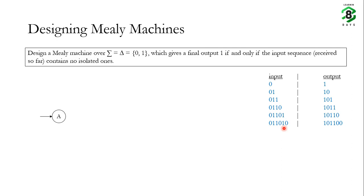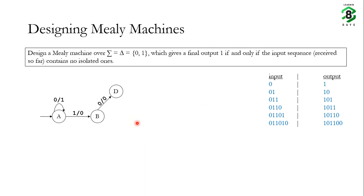We start from initial state A. As long as the machine receives 0 in state A, it produces output 1 because there are no isolated ones. The moment it receives a 1 in state A, it has seen its first 1, so the output should be 0 as it now contains a potential isolated 1. Now in state B, if the machine receives a 0, that means after the 1 we received a 0, confirming an isolated 1. The machine should produce output 0 and go to state D. Since we have seen an isolated 1, the machine can never produce output 1 again.